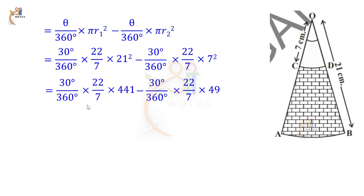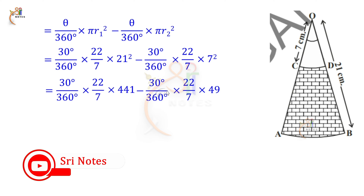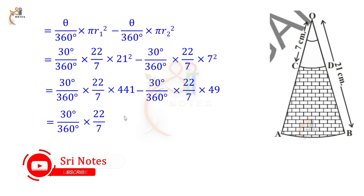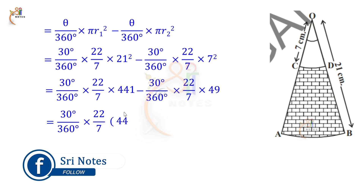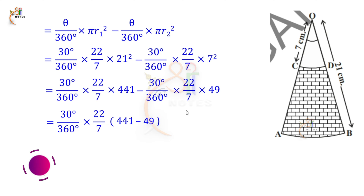Since 30 by 360 into 22 by 7 is common in both terms, take it out as a common factor. Inside the bracket we have 441 minus 49, which equals 392.